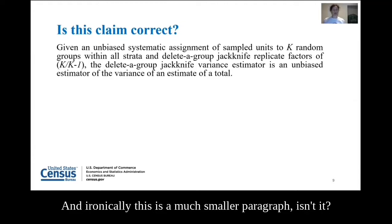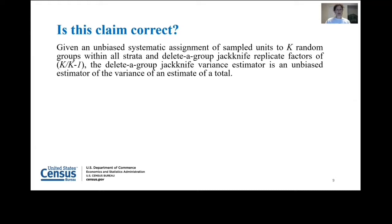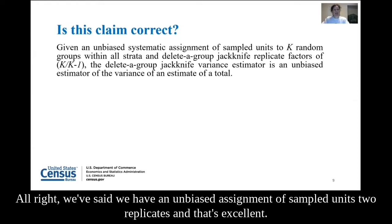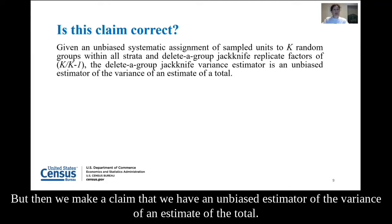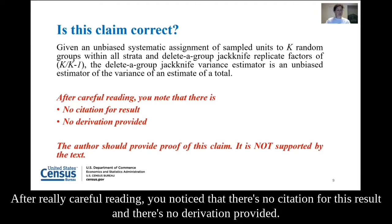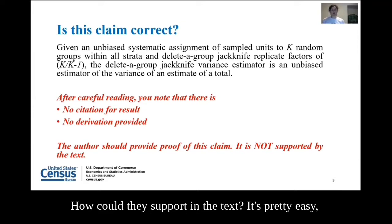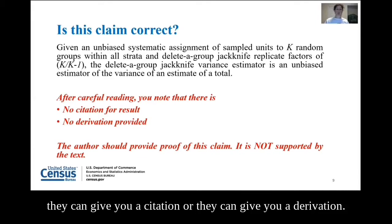Now we're getting into the grayer area. We've said we have an unbiased assignment of sampled units to replicates — excellent. But then a claim is made that we have an unbiased estimator of the variance of an estimate of the total. After careful reading, you notice there's no citation for this result and no derivation provided. The author is making a very strong claim about unbiasedness but not supporting it in the text. How could they support it? It's pretty easy — they can give you a citation or a derivation. One or the other, or both.